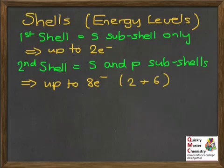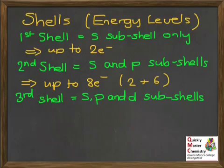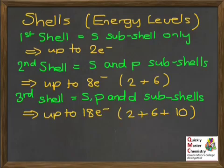The third shell has S, P, and D subshells, so we're kind of gaining one subshell at a time as we work up through the shells. And now we can fit 2 electrons in any S subshell, 6 into any P subshell, and 10 into any D subshells. That gives us a grand total of 18.